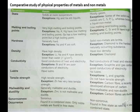Melting and boiling point: metals generally have high melting and boiling points. Exceptions — NAKHG, that is Sodium (Na), Potassium (K), and Mercury (Hg), have low melting and boiling points. Gallium (Ga) has a low melting point but a high boiling point.